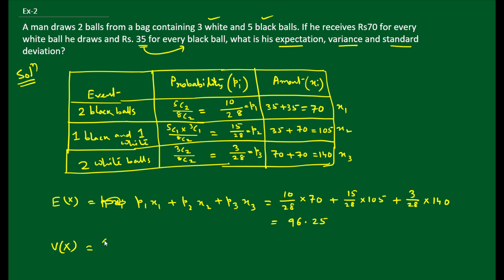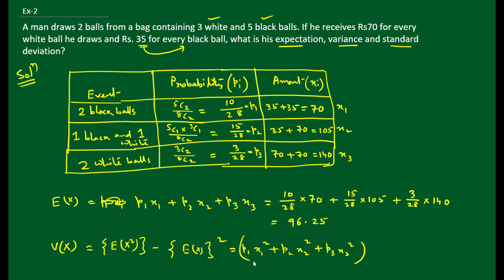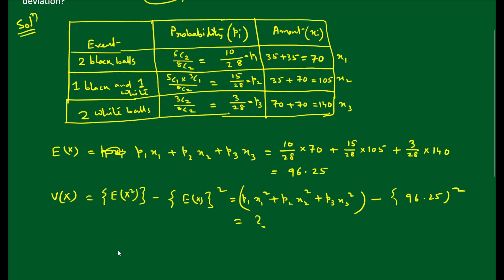Then we find variance using V(X) = E(X²) − [E(X)]². E(X²) = p1·x1² + p2·x2² + p3·x3² = (10/28)×70² + (15/28)×105² + (3/28)×140², minus (96.25)². Please calculate and write your answer in the comment section. Standard deviation = √V(X). The key is to make the table correctly — if the table is correct, the answer will be correct.